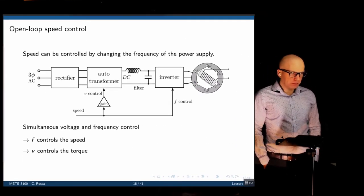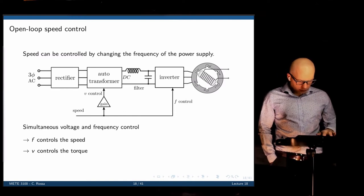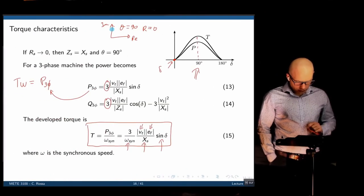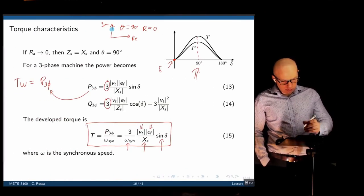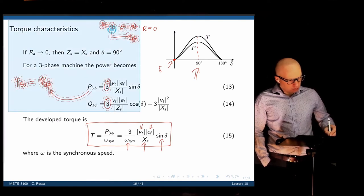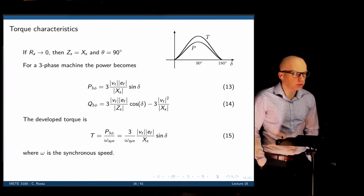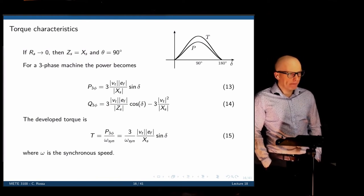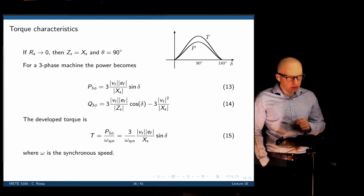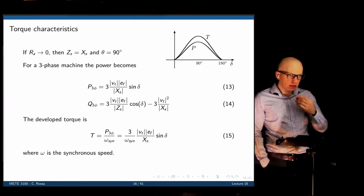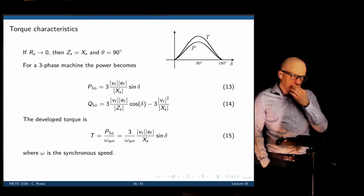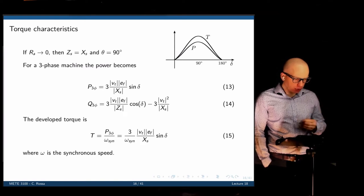A student asked about slide 16: will delta ever reach 180°? The answer is no — delta will not reach 180°. If it passes beyond 90°, the torque sign reverts and the system loses synchrony. So the maximum torque occurs at exactly 90 degrees.